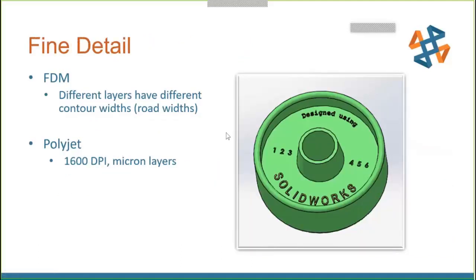For fine detail: in FDM, your lettering is defined by the road width on each layer, so that limits how small you can get. For PolyJet at 1600 DPI, lettering is not a problem — you can do almost any small lettering. We'll talk more about lettering shortly.